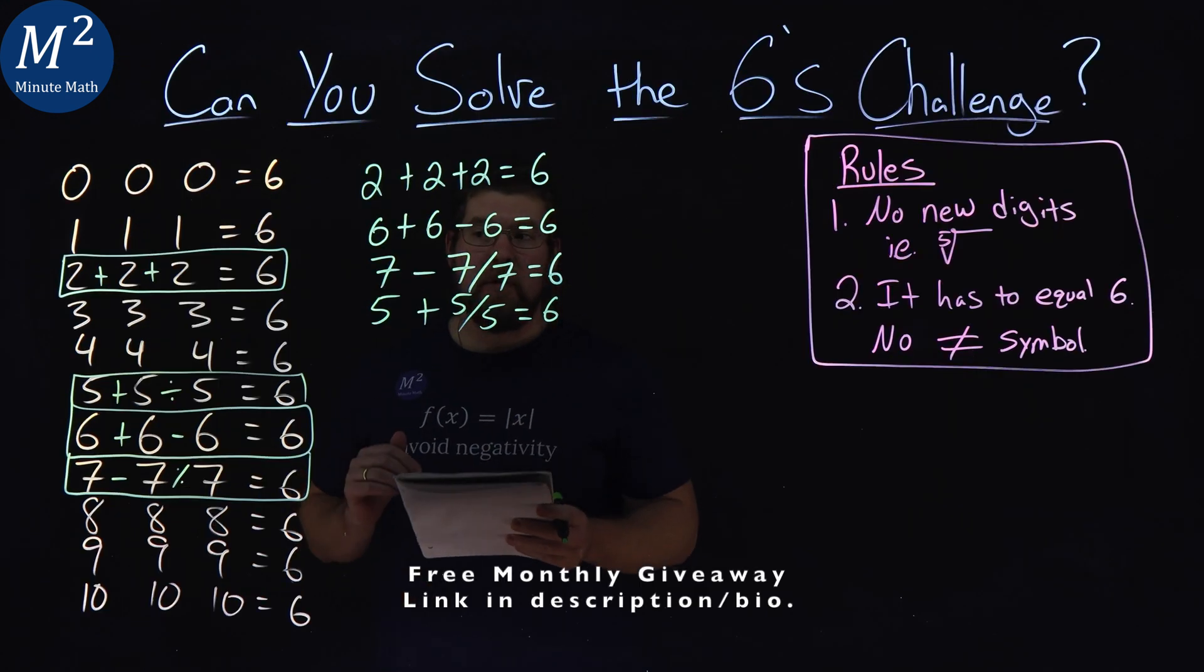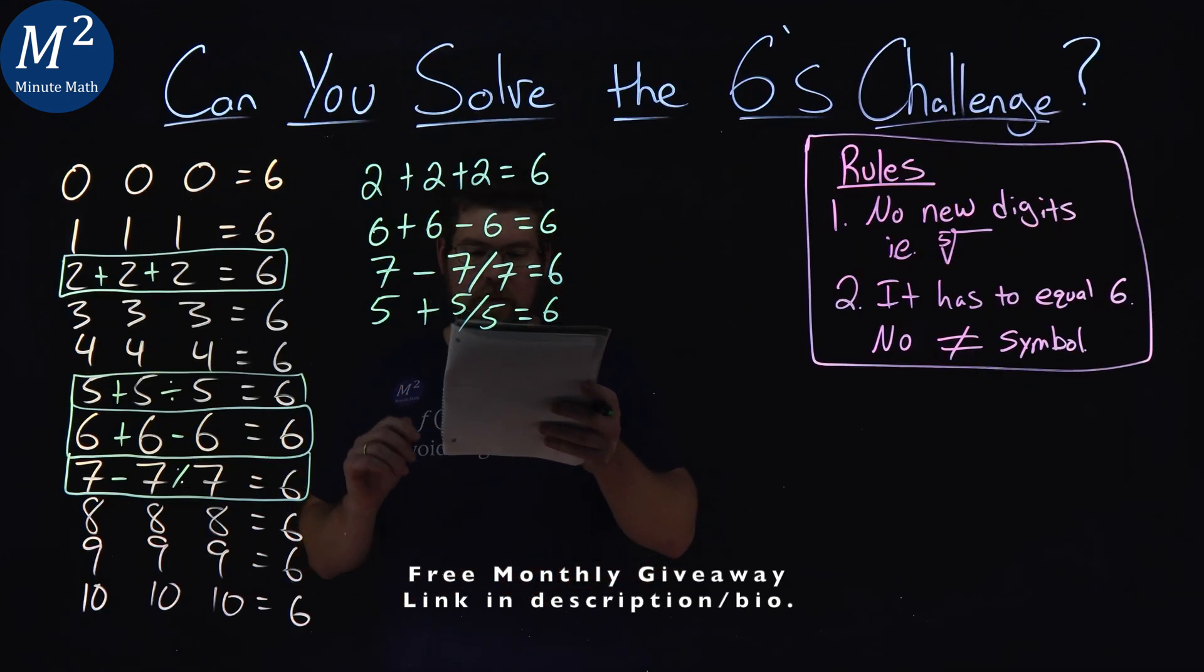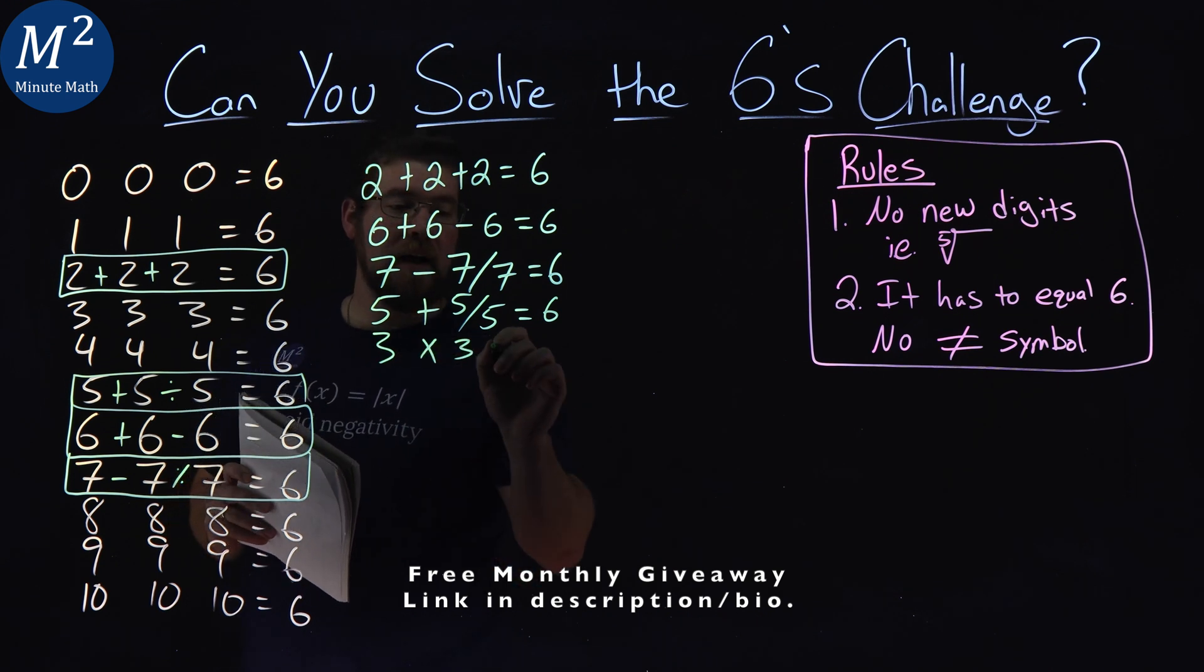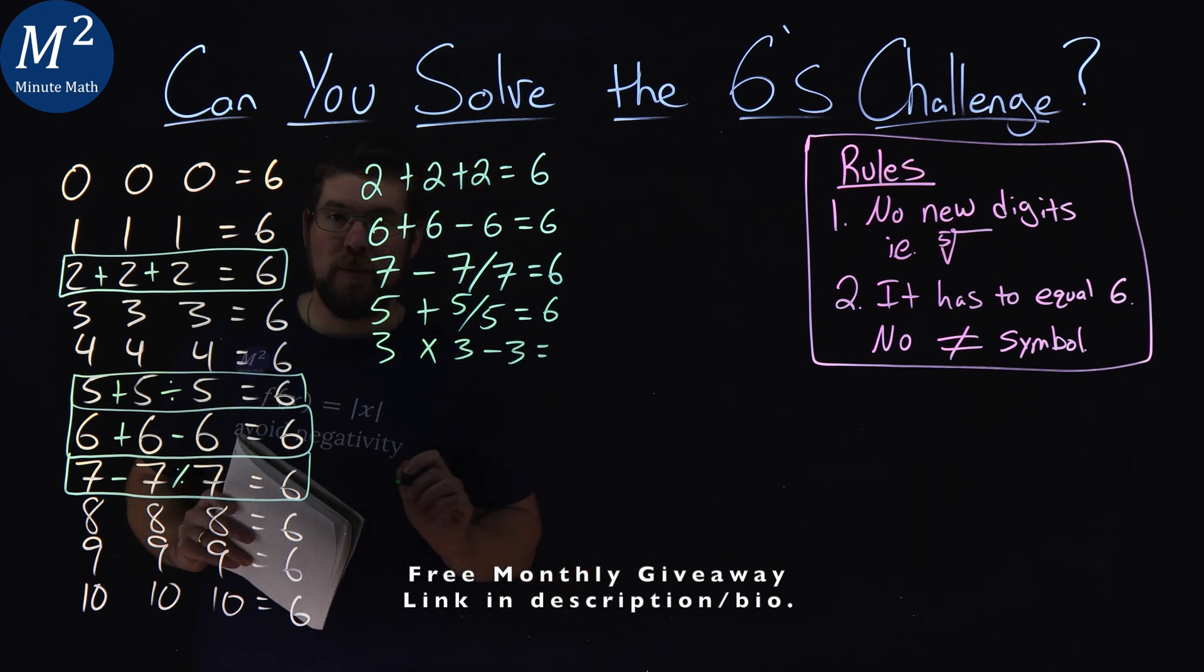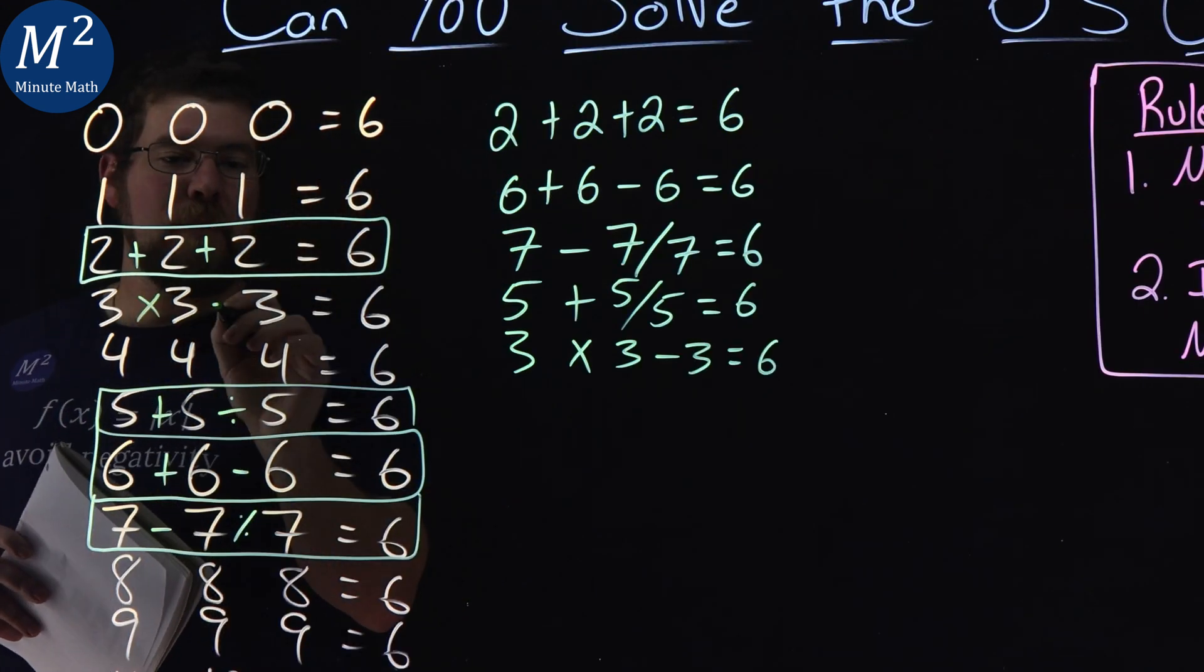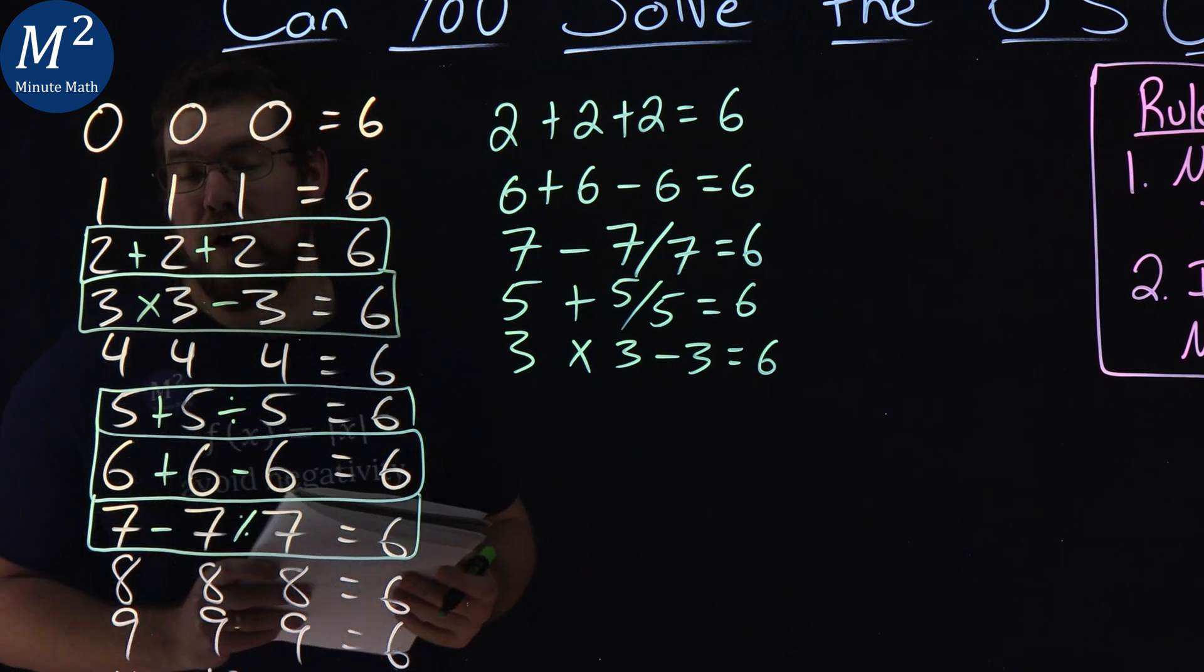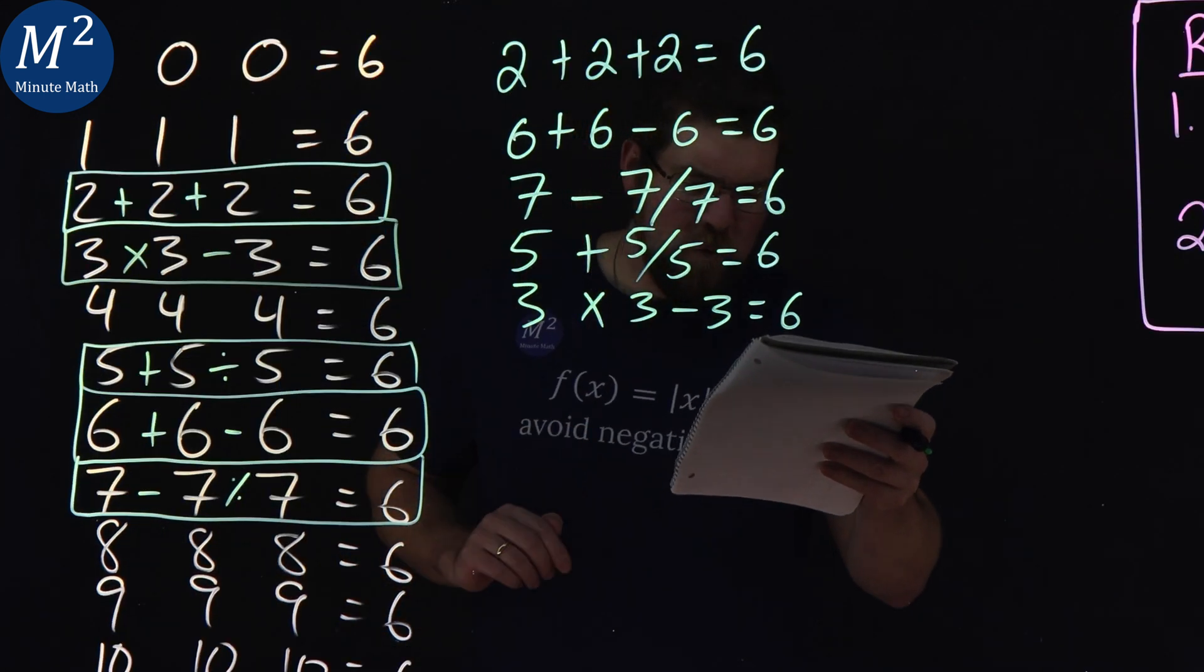The next one I got was the threes. Three times three is nine, minus three gives me the six. So we have three times three minus three, gave me six, and we have that one covered.